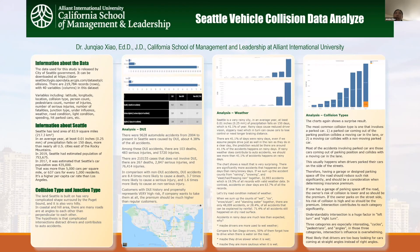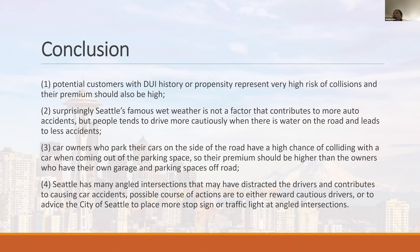To sum up the variable analysis, four conclusions can be drawn. First, potential customers with a DUI history represent a very high collision risk, and their premium should be high. Second, surprisingly, Seattle's famous rainy weather is not a factor that contributes to more auto accidents — people tend to drive more cautiously when there is water on the road, leading to fewer accidents. Third, car owners who park on the side of the road have a higher chance of collision when coming out of the parking space, so their premium should be higher than owners with a garage or off-road parking. Fourth, Seattle has many angled intersections that may distract drivers and contribute to car accidents. Possible courses of action are to either reward cautious drivers or to advise the city of Seattle to place more stop signs or traffic lights at angled intersections.